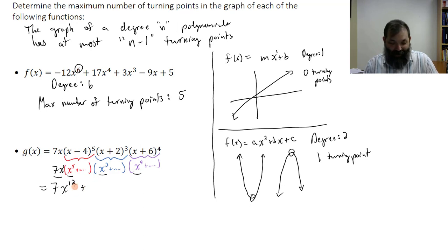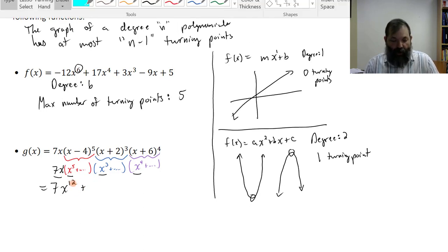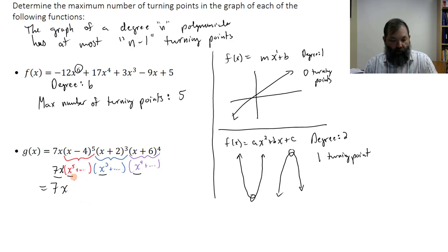I forgot how to add. 7x^13, plus a whole bunch of other terms. So the degree of this polynomial is 13, and the maximum number of turning points is then 12.